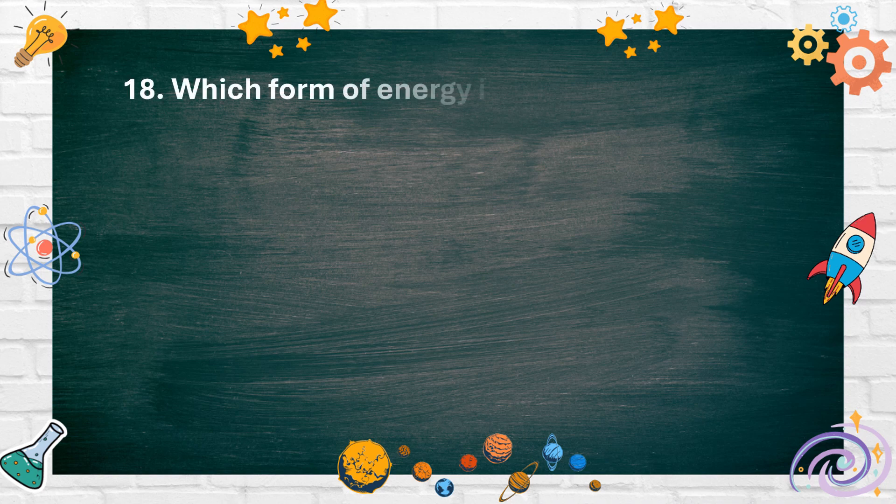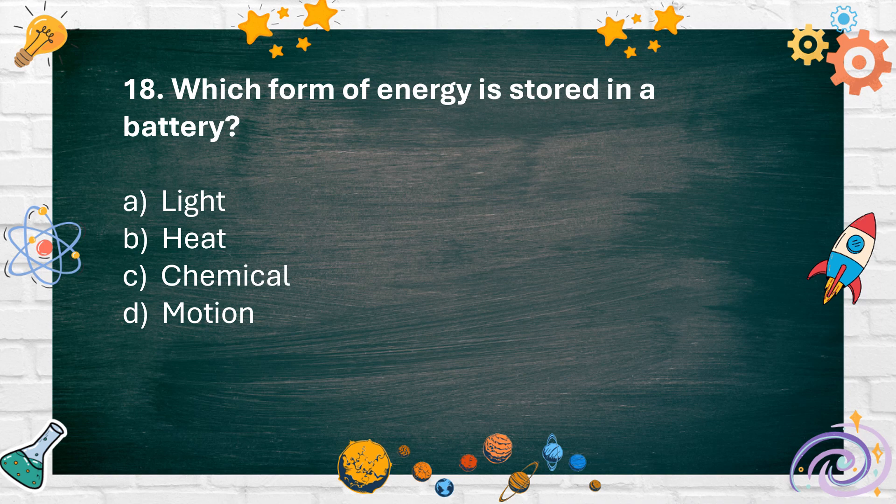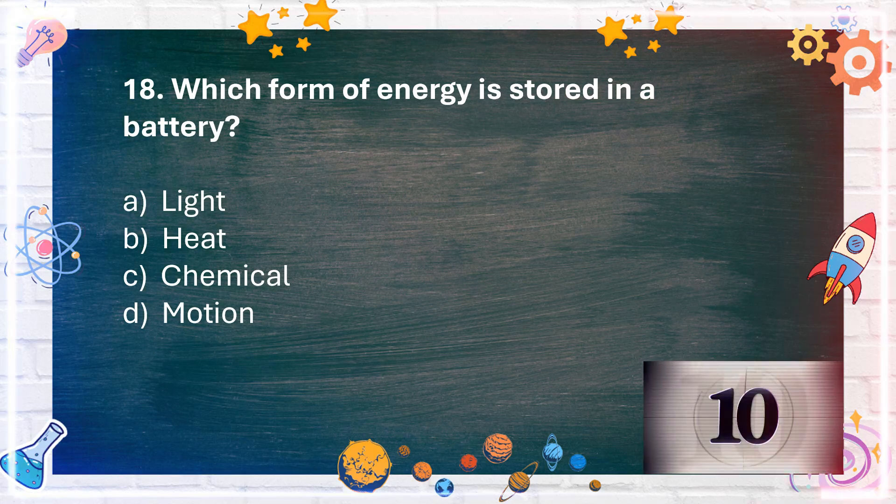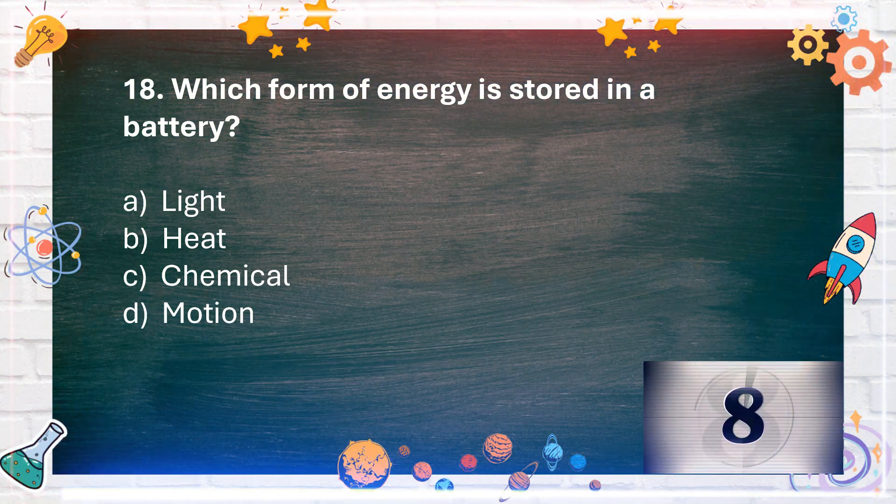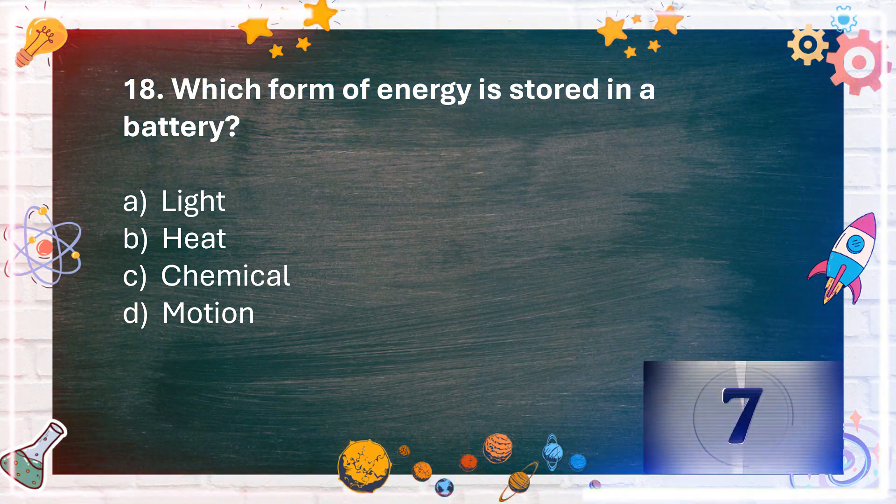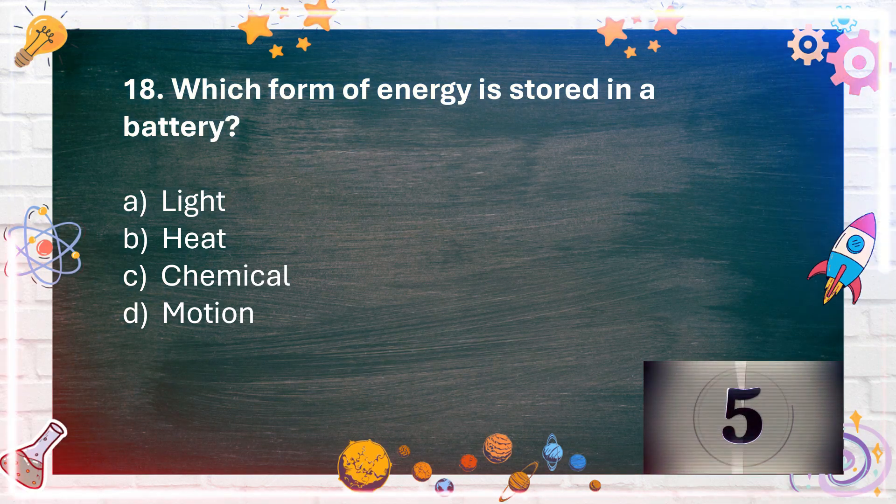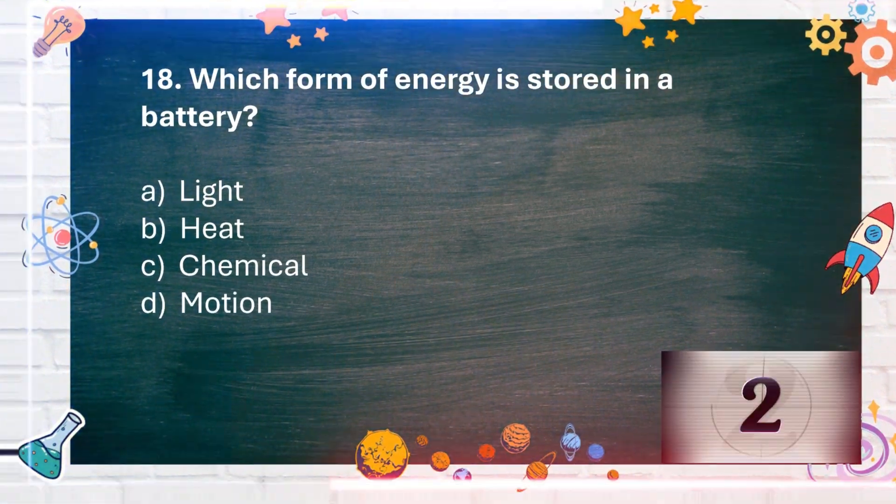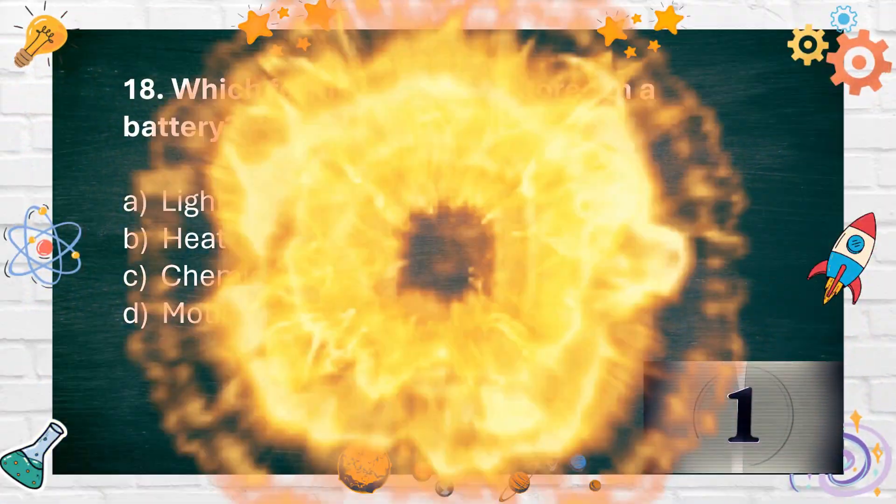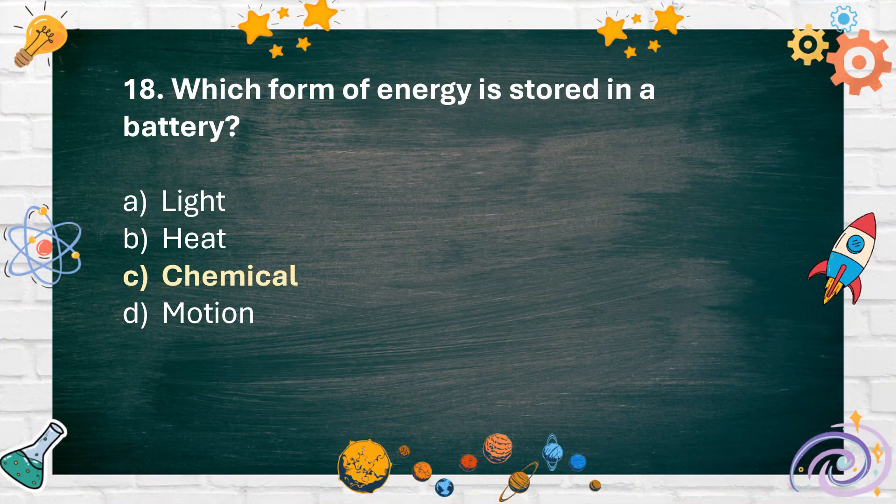Number 18: Which form of energy is stored in a battery? A. Light. B. Heat. C. Chemical. D. Motion. The answer is C. Chemical.